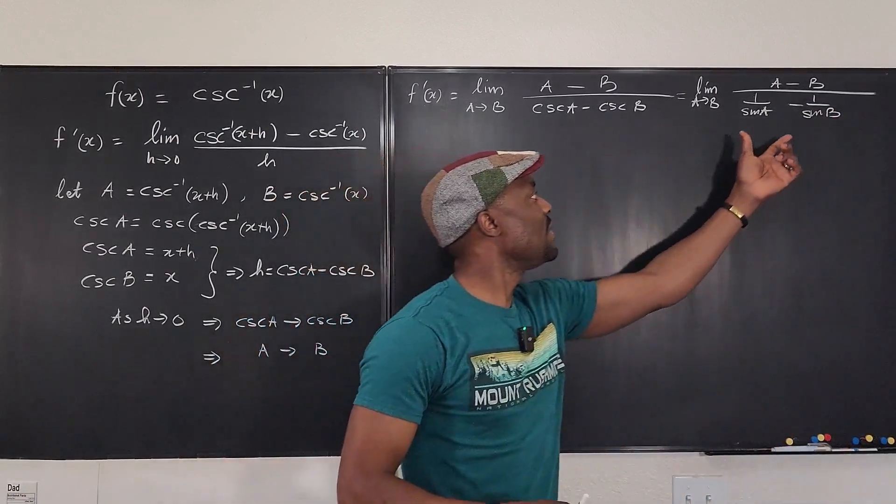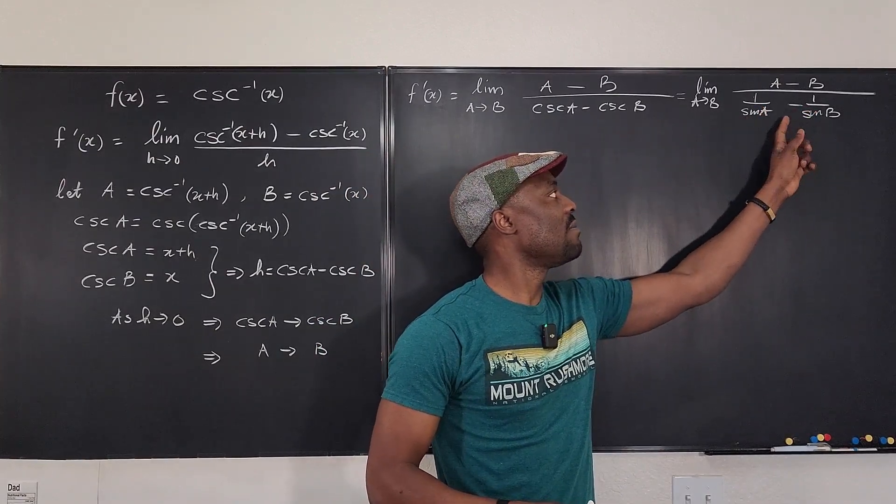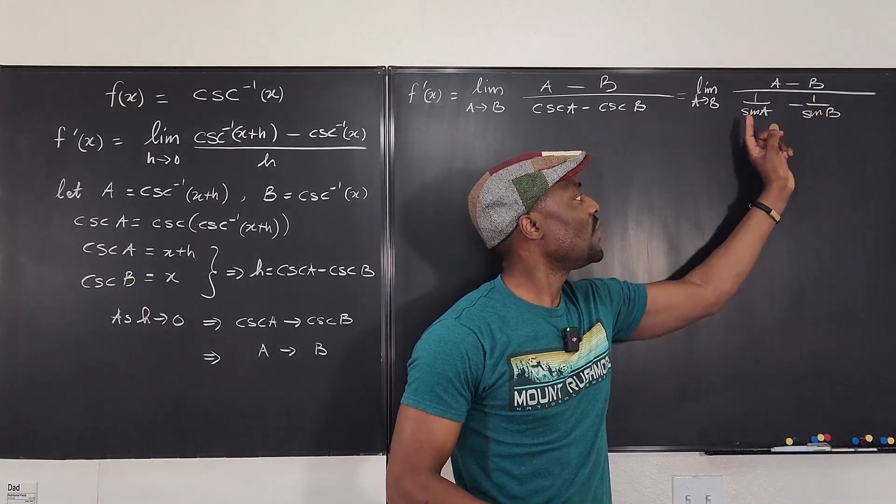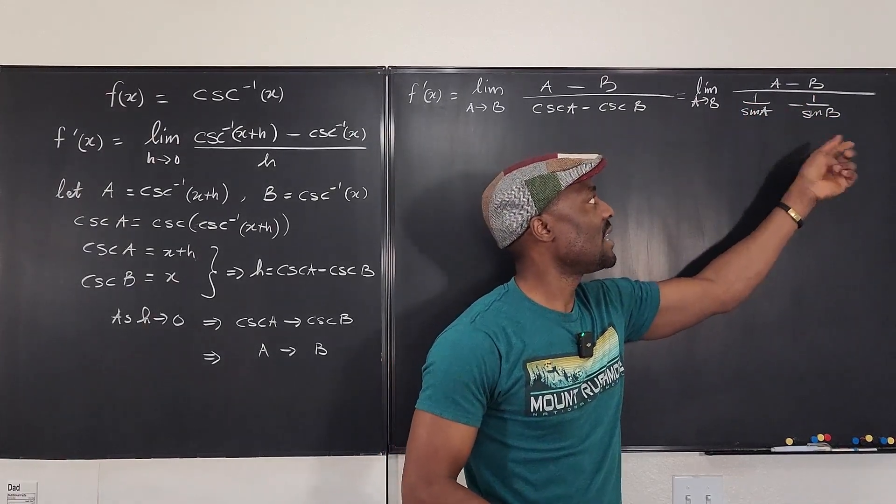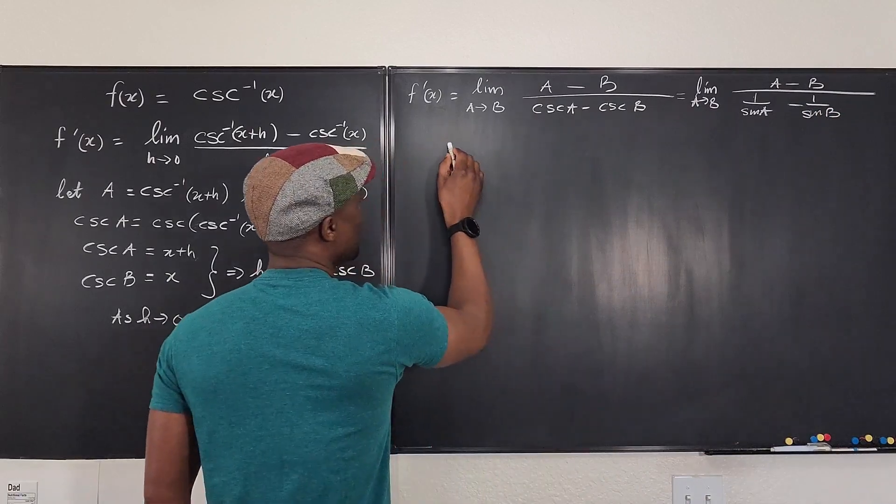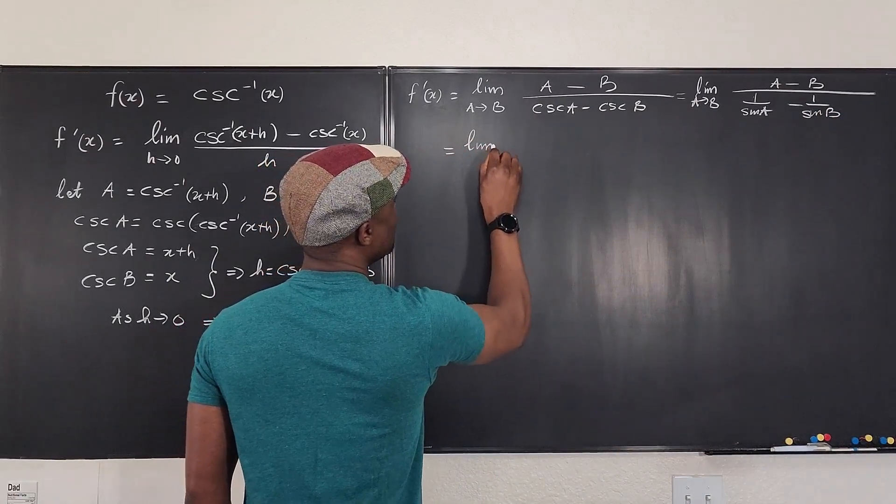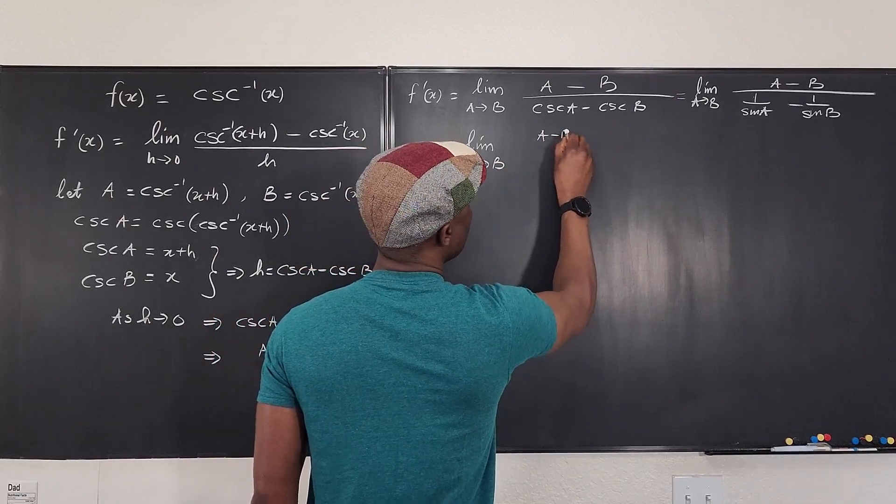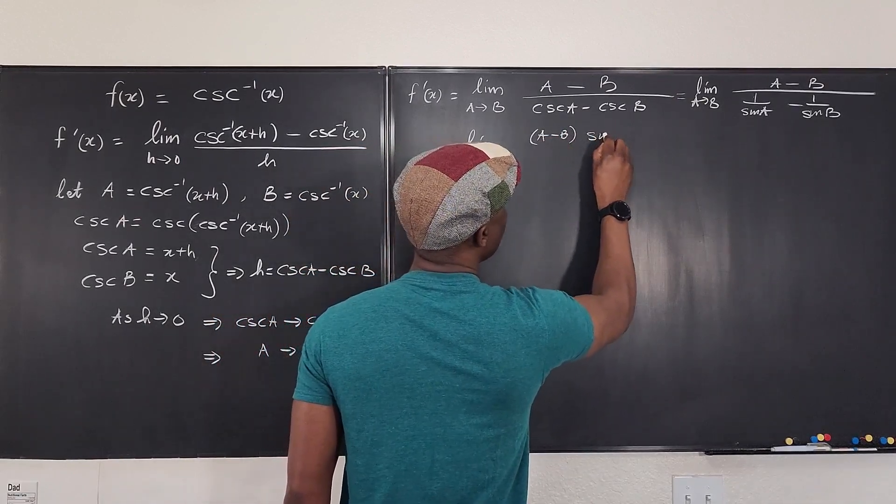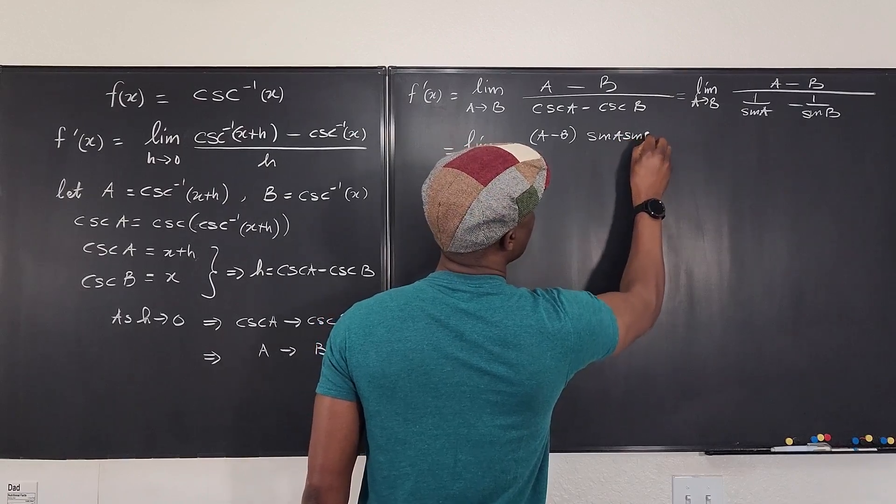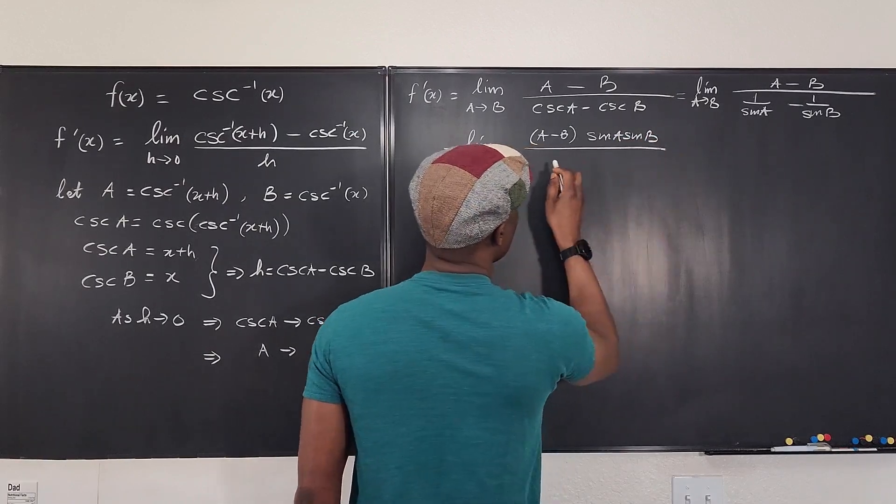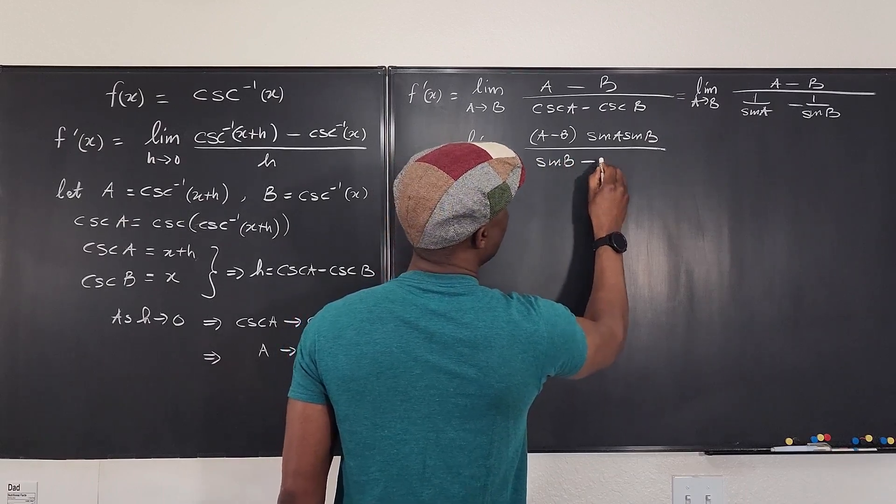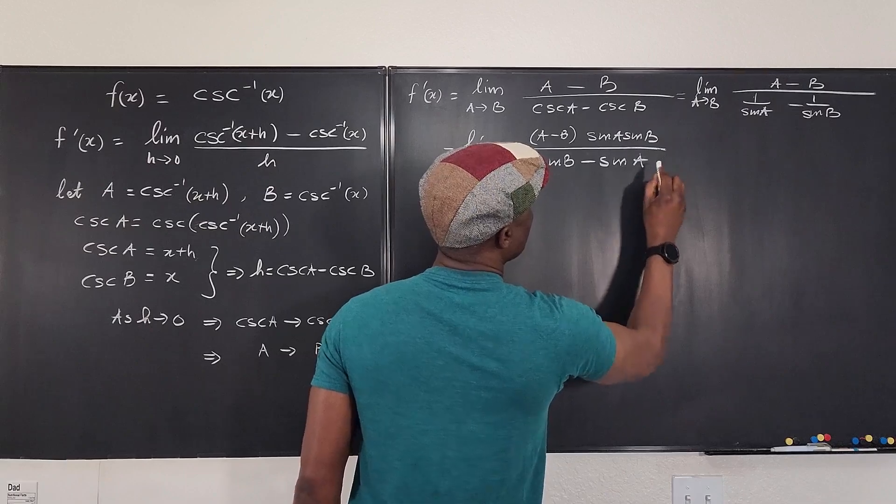So at this point, it looks like everything is looking great. Except that cosecant a can be written as one over sine a. And this is one over sine b. So let's write this as the limit as a goes to b of a minus b divided by one over sine a minus one over sine b.